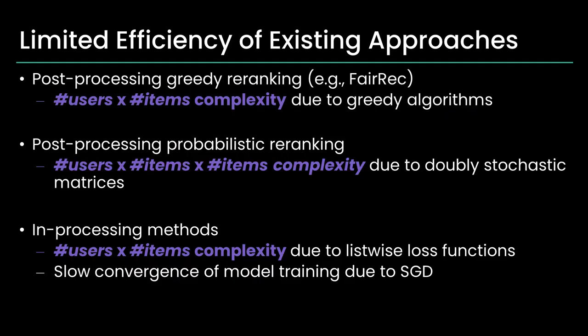Many existing methods face scalability issues in large applications. Methods using doubly stochastic matrices exhibit space complexities that increase more than linearly with the number of items per user. Additionally, in-processing approaches, which integrate fairness into model training, depend on the slow-converging stochastic gradient descent for complex optimization.